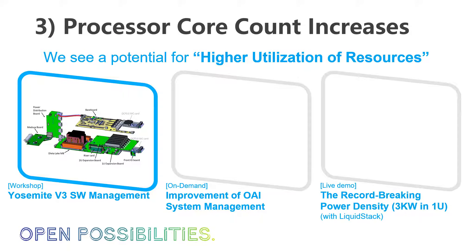Now the third trend: processor core count increases, which means there is a potential for higher utilization of resources. We have a 1P system, Yosemite V3, and this 1P system is able to cater to multiple use cases. A 1P system used to be low-end with simple use cases, but now it can serve many use cases. As we use these 1P systems for many use cases, we need a common framework for management — making sure our BMC is divided appropriately where commonality across all configurations is maintained.